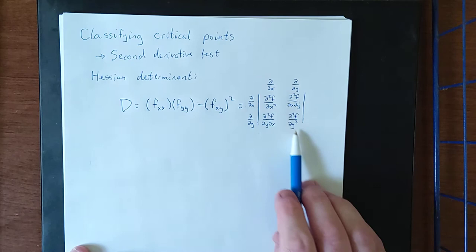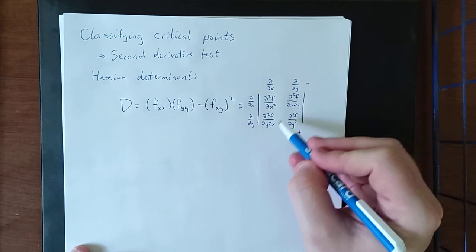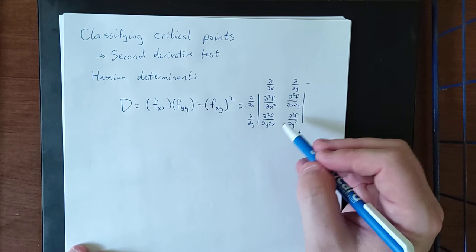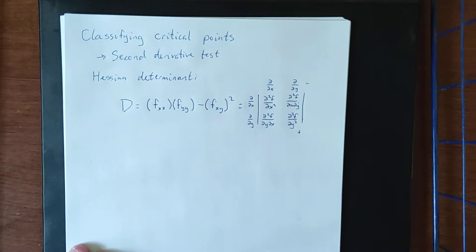So these two multiplied together would be accounted for with a plus. And then these two, despite the fact that they're in the opposite order, Clairot's theorem takes care of that. Mixed partial derivatives, or mixed second partial derivatives, will be equal to each other.